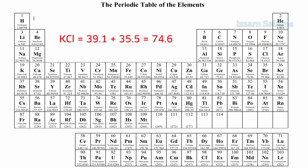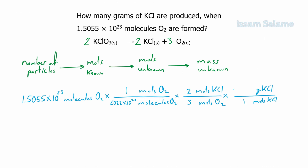So the total molar mass of potassium chloride is 74.6, which we write next to grams of potassium chloride. We cancel similar units between numerators and denominators, then multiply all numerators together and divide by the denominators to get the answer: 12.4 grams of potassium chloride.